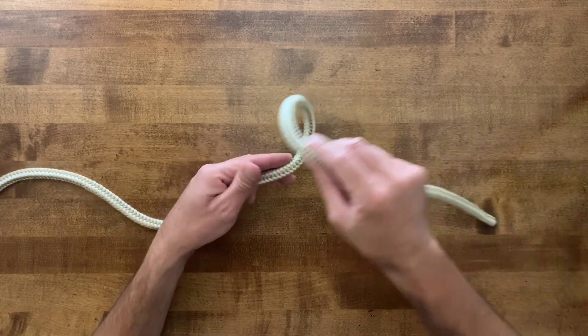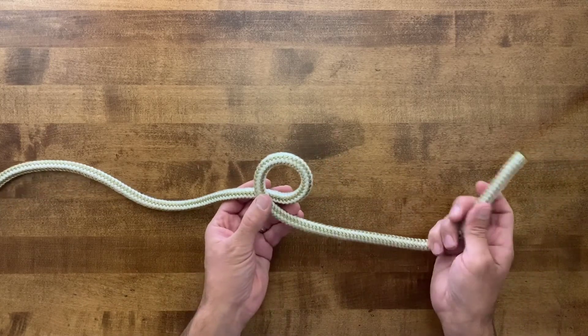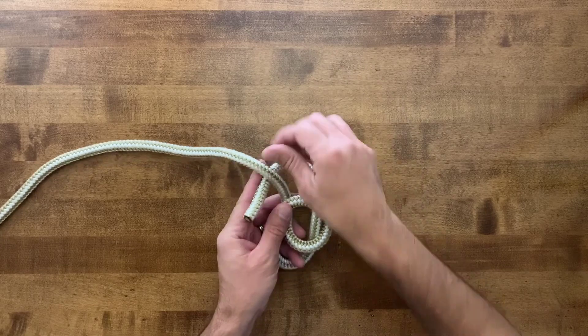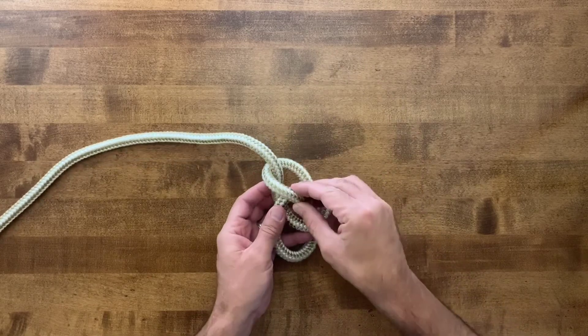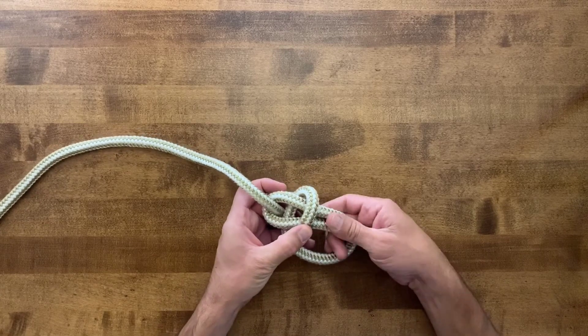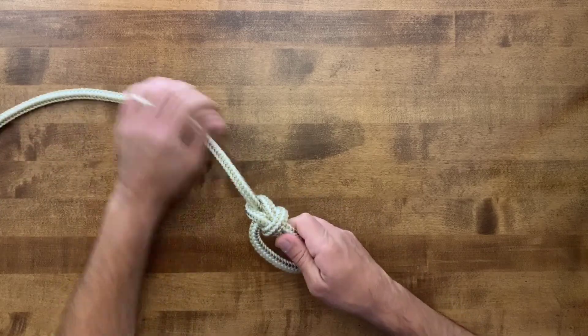We start by making an overhand loop, then we take the tag end or the working end. We go up through that loop, around the standing part, and back down through that loop. Hold the tag and the loop that we just tied, and then pull against the standing part.